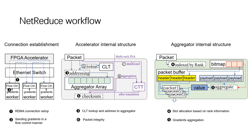Now let's look at the NetReduce workflow. During initialization, each worker in a ring sets up one RDMA connection to its successor and also accepts one RDMA connection from its predecessor. After that, all workers synchronously send gradient tensors in the same order. When packets arrive at the switch, it first checks the CLT to get the INA header information, then addresses the aggregator array. In this aggregator array, a specific slot is allocated based on the rank information in the header. After aggregation, the checksum ensures packet integrity, and finally the packet is forwarded.